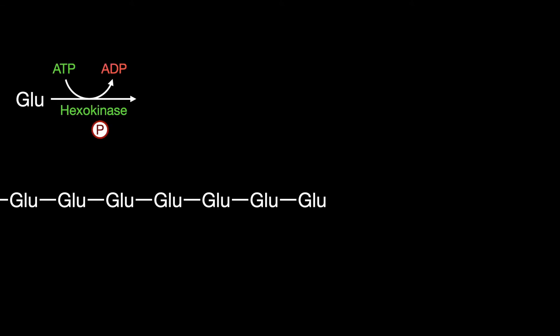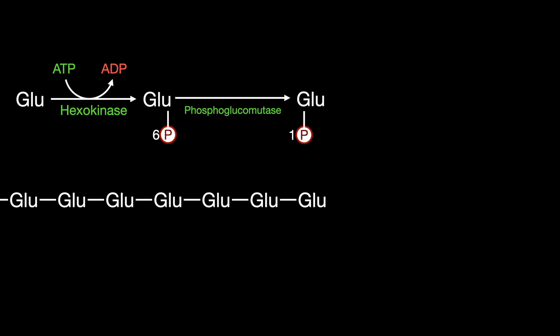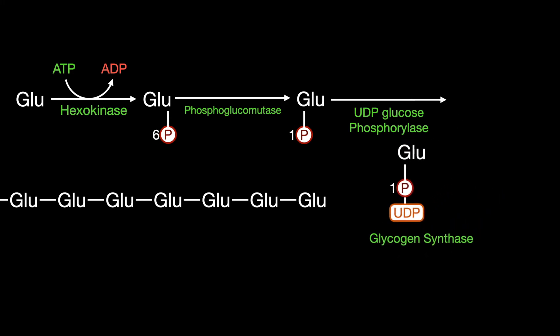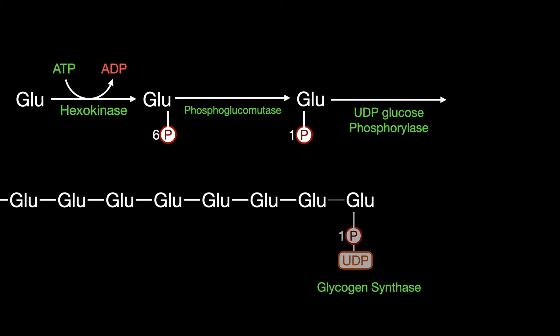Glycogen synthesis starts with glucose. Via glycolysis, it is converted into glucose-6-phosphate, and then phosphoglucomutase transfers the phosphate from the 6-position to the 1-position. UDP-glucose phosphorylase then activates it, turning it into UDP-glucose. It is the activated UDP-glucose that acts as a substrate used to make alpha-1,4 linkages by glycogen synthase.